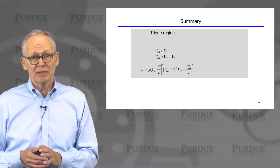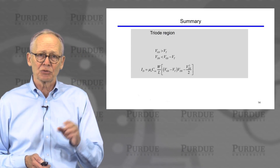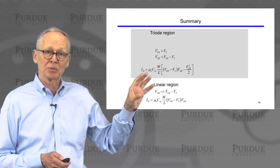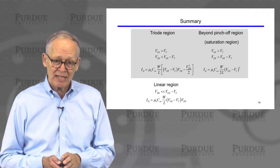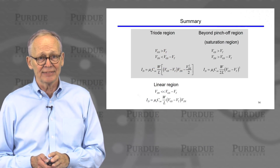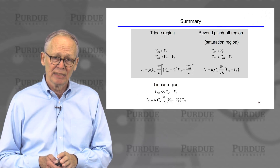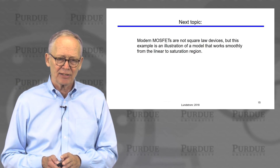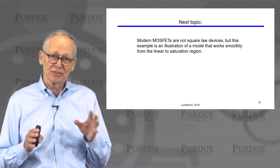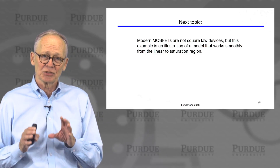That's the derivation of the IV characteristic of a square law MOSFET. To summarize: for low drain-to-source voltage we have the triode regime; for very low V_DS this simplifies to the linear regime; for larger V_DS beyond the pinch-off voltage V_G minus V_T, the current saturates at a value proportional to the square of (V_G minus V_T). This is a classic derivation — if you make the channel long enough you'll still see MOSFETs behaving this way, but modern MOSFETs have short channel lengths and do not behave as square law devices.